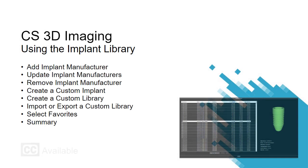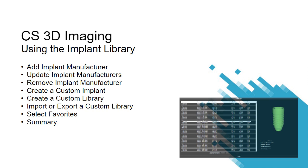CS3D Imaging Using the Implant Library — Recorded Class. This recorded class is designed for clinical team members and provides instruction on using the implant library in CS3D Imaging. By the end of this class, you should be able to: Add an Implant Manufacturer, Update Implant Manufacturers, Remove an Implant Manufacturer, Create a Custom Implant, Create a Custom Library, Import or Export a Custom Library, and Select Favorites.